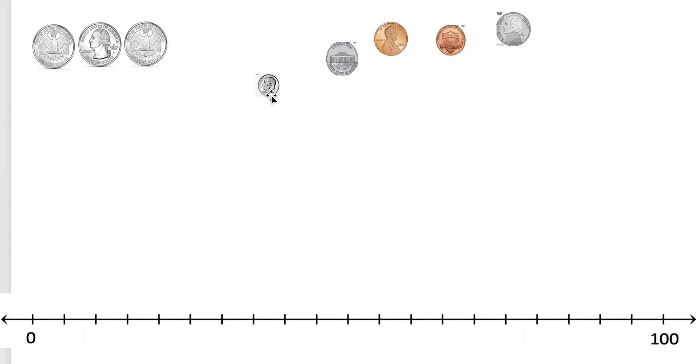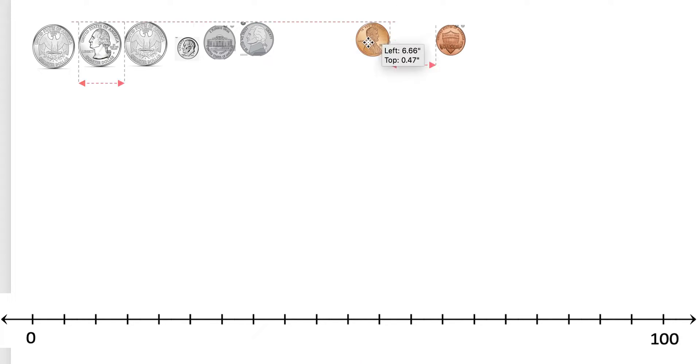I know the next coin with the largest value is a dime, so I'm going to put the dime right next to the quarter. After the dime there comes a nickel, and a nickel is worth five cents, so I'm going to put that right next to the dime. And next I have my pennies. This coin has the least value, so I'm going to put them right next to my nickel.